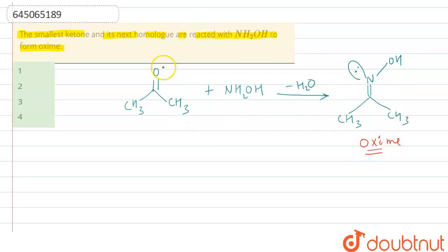This is oximes formed by acetone. Let's have a look at the next homologous. What do you mean by next homologous? When we add one CH2 atom to this acetone, then we will get this type of homologous of acetone: CH3-CH2-CH3, and here CH3 is there.